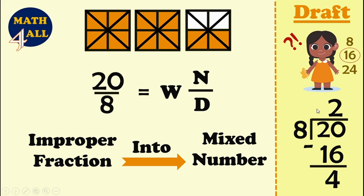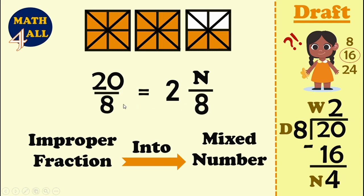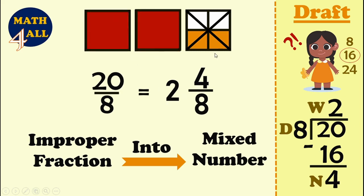Now let's write the letters W, D, N — don't forget the same order: W, D, N. W means whole number, which is 2. D is the denominator, which is 8 — the same denominator as before. N is the numerator, which is 4. Comparing with the model: the whole number is 2 and the fraction is 4 over 8. This was our lesson, thank you.